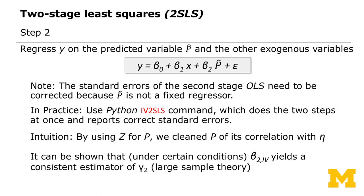The intuition behind the two-stage least squares is that by using z for p, we cleaned p of its correlation with eta. We find something exogenous — the instrument — that is highly correlated with the endogenous variable p, the participation decision. Then we clean the endogenous variable of its correlation with eta. It can also be shown under certain conditions that the IV coefficient beta_2-IV yields a consistent estimator of gamma_2, which you can find the proof for in standard statistics textbooks.